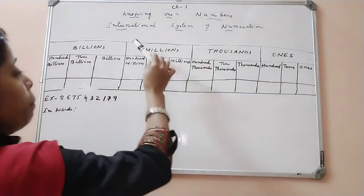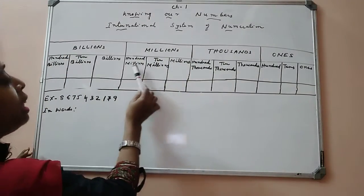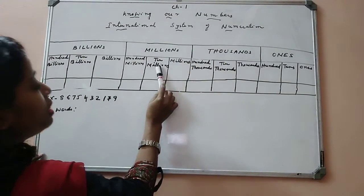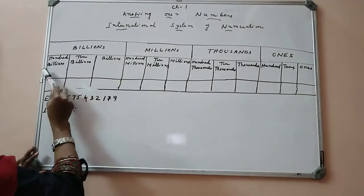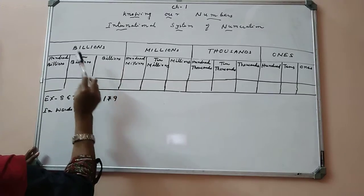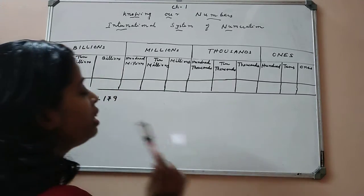Millions period consists of three places: millions, ten millions, hundred millions. Billions period consists of three places: billions, ten billions and hundred billions.